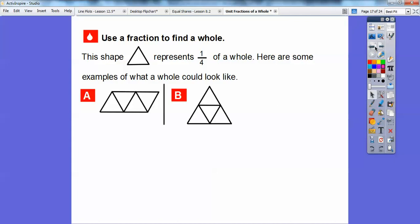It could look like this also. So, just as long as it has 4 triangles that are the same size, this size right here, this represents 1 of the 4, 1 of the 4 equal pieces right there.